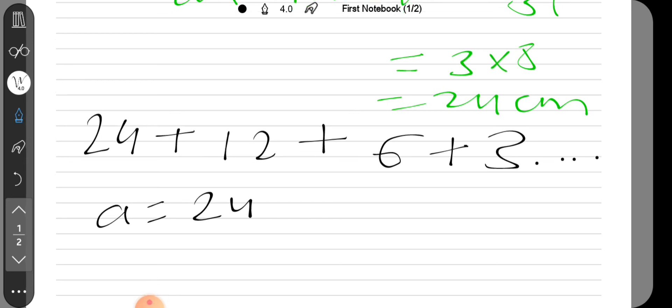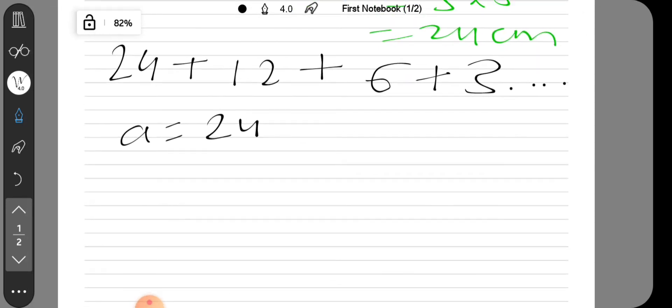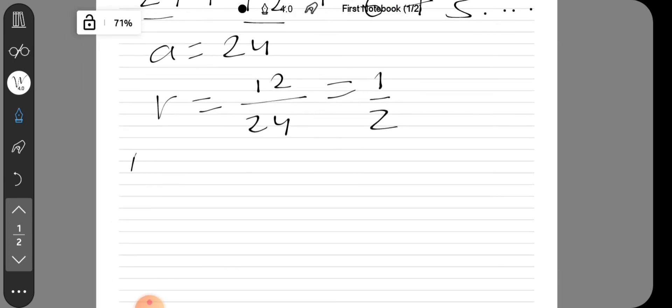The first term is a equals 24. The common ratio r equals second divided by first, which is 12 by 24, equals 1 by 2.